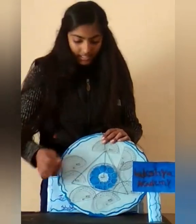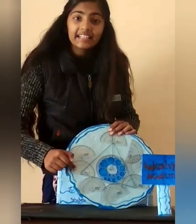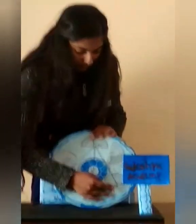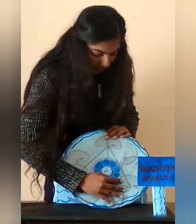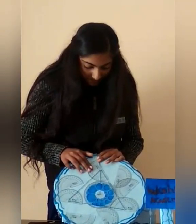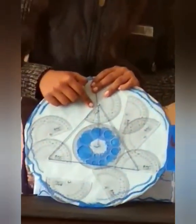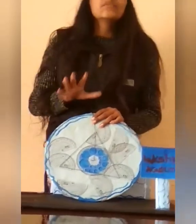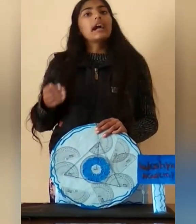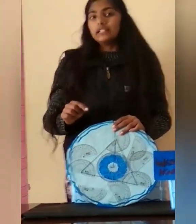I measure all three angles. This angle is equal to 60 degrees, this angle is equal to 60 degrees, and this angle is also equal to 60 degrees. Hence we prove that in the equilateral triangle all three sides are equal to each other and their opposite angles are also equal to 60 degrees. The sum of all three angles is equal to 180 degrees.